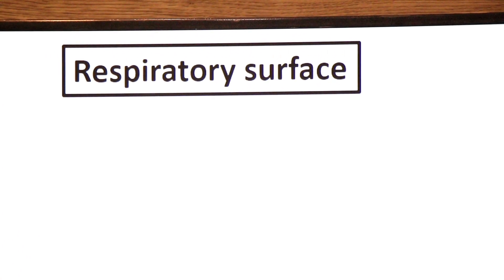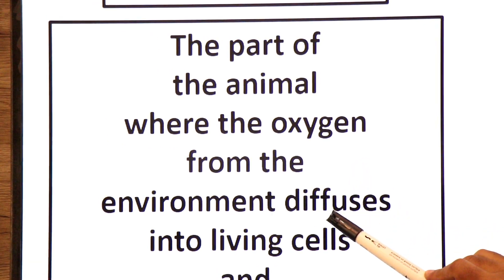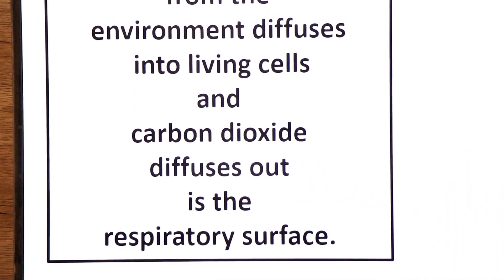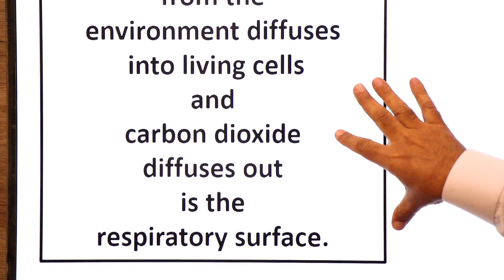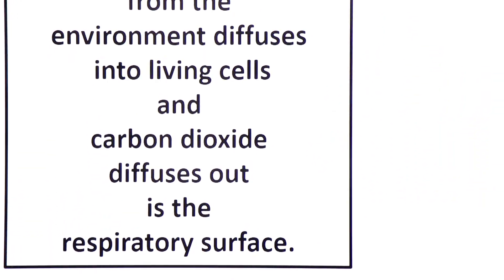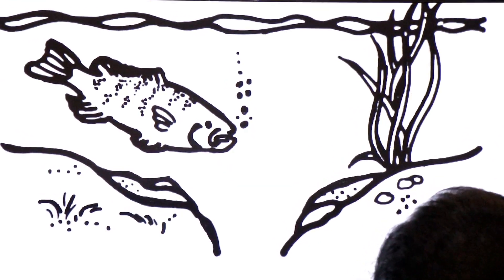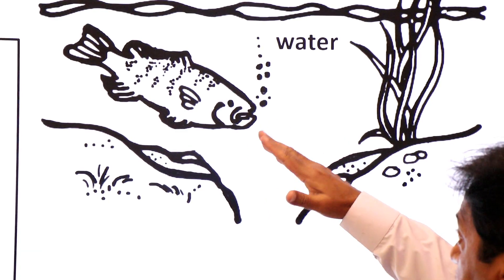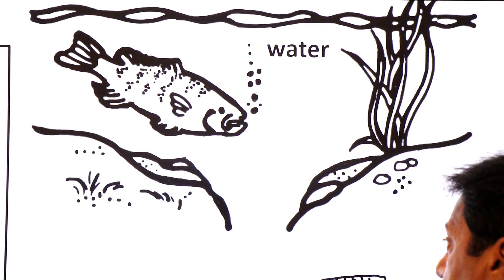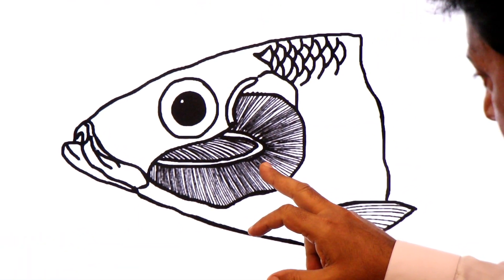Now let's see what is respiratory surface. The part of the animal where oxygen from the environment diffuses into the living cells and carbon dioxide diffuses out is the respiratory surface. It's that surface through which oxygen from the environment diffuses into the animal's body and carbon dioxide diffuses out. If you look at this fish living in water, it has to do gaseous exchange. So there should be a respiratory surface here. Gills or gill filaments are its respiratory surface.